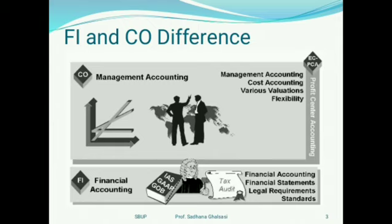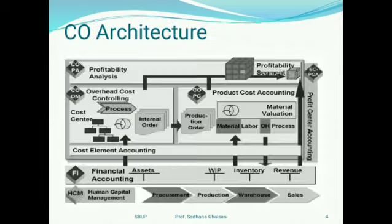The architecture of Controlling consists of five elements. The first is Cost Element Accounting, which allows data to pass from FI to CO. The second is Product Cost Accounting, which takes care of production processes and their costs. The third is Overhead Cost Controlling, which takes care of all indirect costs — how much is budgeted, how much is actual, and why the differences occur.